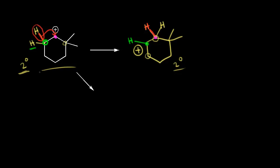We haven't increased our stability. We could also draw this without all those hydrogens — just the methyl groups with a plus one formal charge on this carbon. Let's try doing another kind of shift. Looking at the carbon in blue, we have two methyl groups, so we could do a methyl shift with one of them, moving the CH3 over to the carbon in magenta.